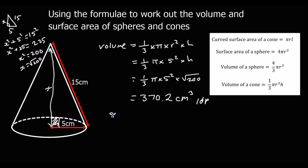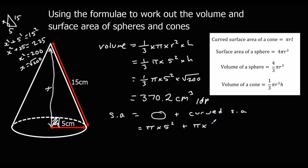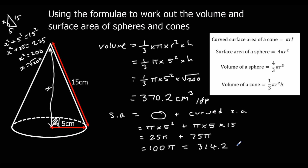Now for the curved surface area and the total surface area of the cone. The total surface area is the area of the circle plus the curved surface area. The area of the circle is pi times r squared, so pi times 5 squared. Plus the curved surface area, which is pi times r times l, so pi times 5 times 15. That gives 25 pi plus 75 pi, which is 100 pi, or 314.2 centimeters squared to 1dp.